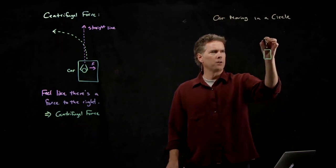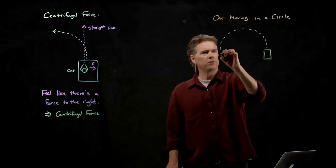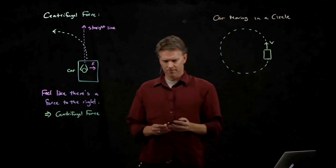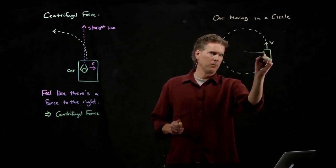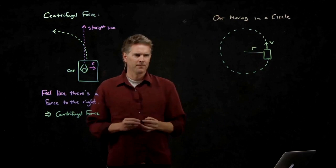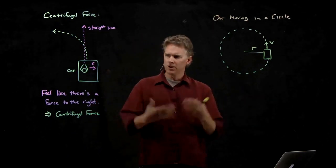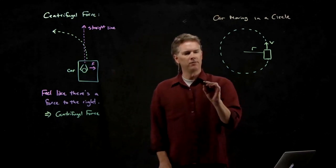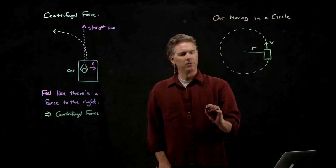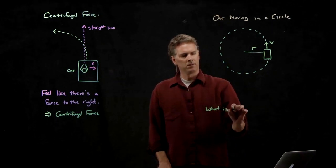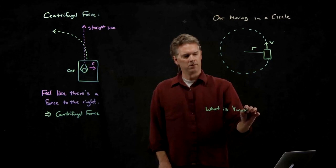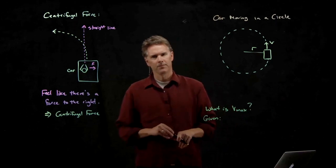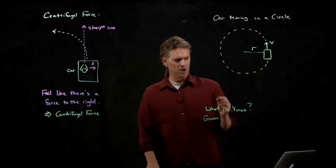So here's your car. You're going to go around in this circle. And you're going to do it at speed v. And we need to give the circle a radius r. And you're going to go faster and faster until you just start to skid. What is V max? That's our question.